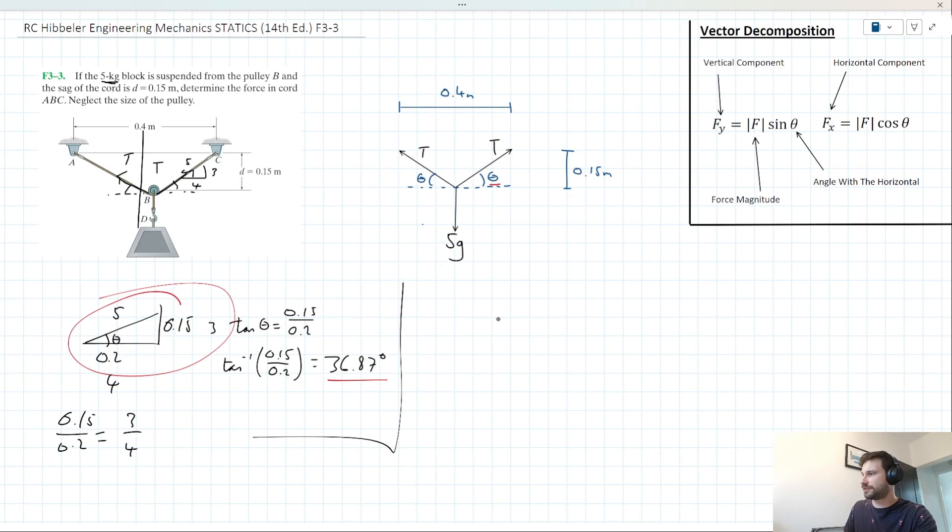Now we can start resolving. Let's resolve vertically. In the vertical, forces add to zero, so what's going up equals what's going down. Going up, we have the vertical component of T on both sides: 2T times 3 fifths. Acting down, we've got 5G. Is this solvable? Yes, we've got one unknown.